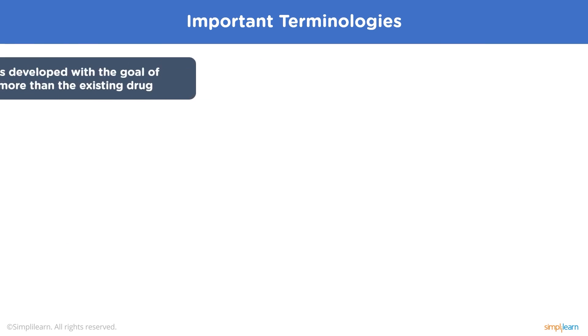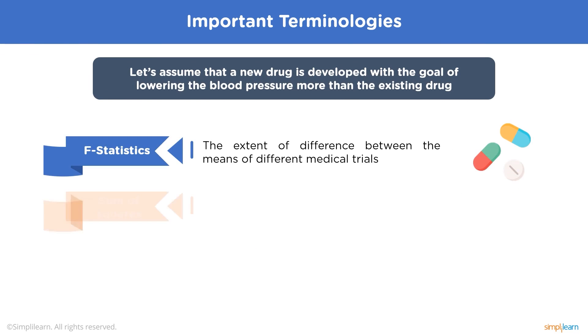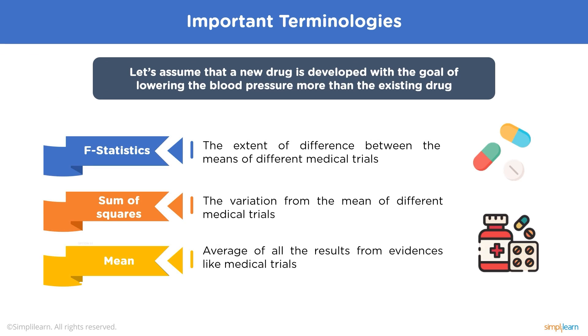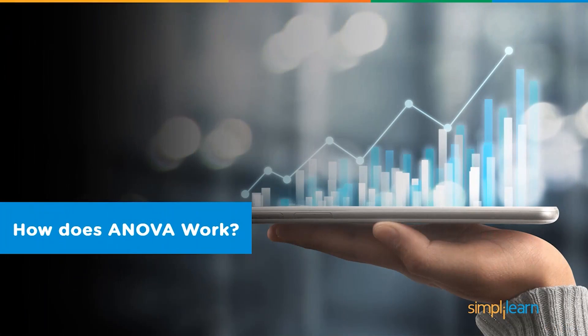The statistic will be the extent of difference between the means of different medical trials. The sum of squares will be the variation from the mean of different medical trials. And the mean will be the average of all the results from evidence like medical trials. Now let's understand the core concept between how the ANOVA works.